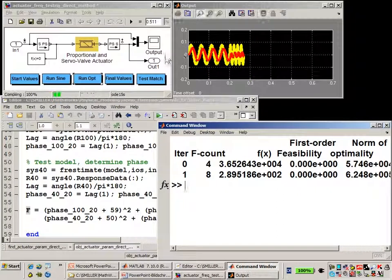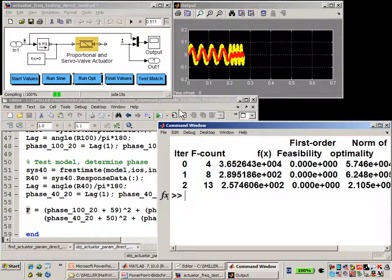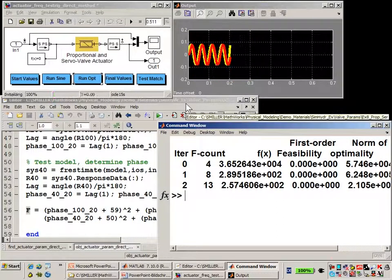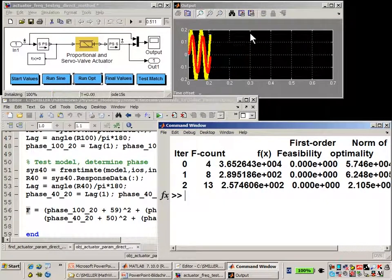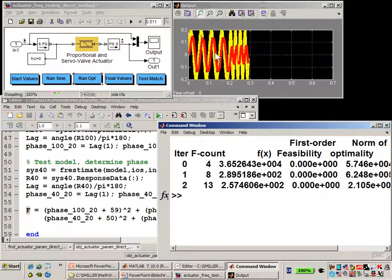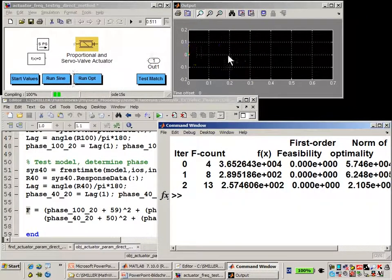Every time that the simulation up here blinks and you see a new plot on the scope, that means a new simulation has been run with new values of the parameters. And you can see it's alternating between 100% signal, the two points, and then the 40% signal, the two points, or the two frequencies.